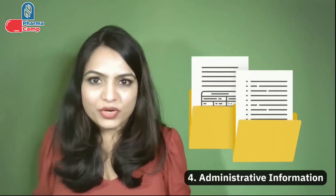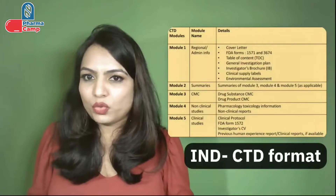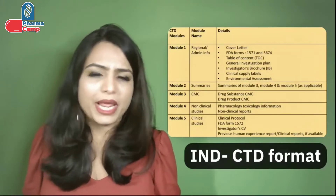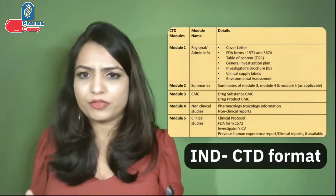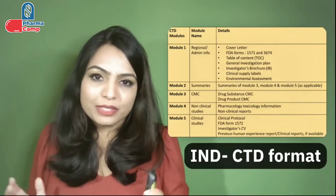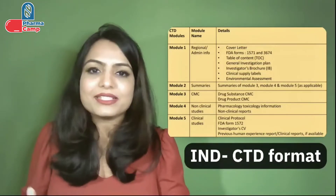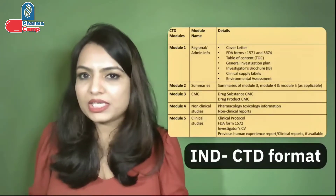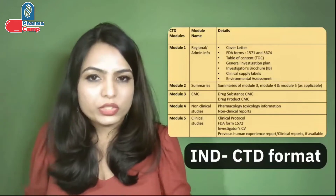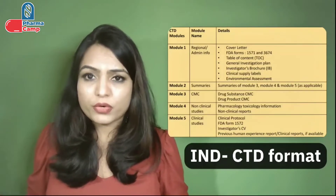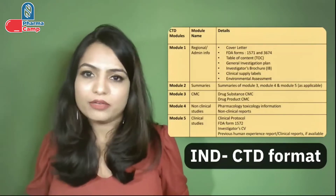We combine all four kinds of information and data and reports into a specific section and format called the CTD format. Under Module 1, as you can see, there are items like a cover letter, FDA form, table of contents, general investigation plan, and so on — these are the administrative information included in Module 1. In Module 2 we have a summary of Modules 3, 4, and 5. Module 3 includes CMC-related information, Module 4 includes non-clinical information, and Module 5 includes clinical information. So whatever information we saw from the four sources, we arrange it in these five modules.